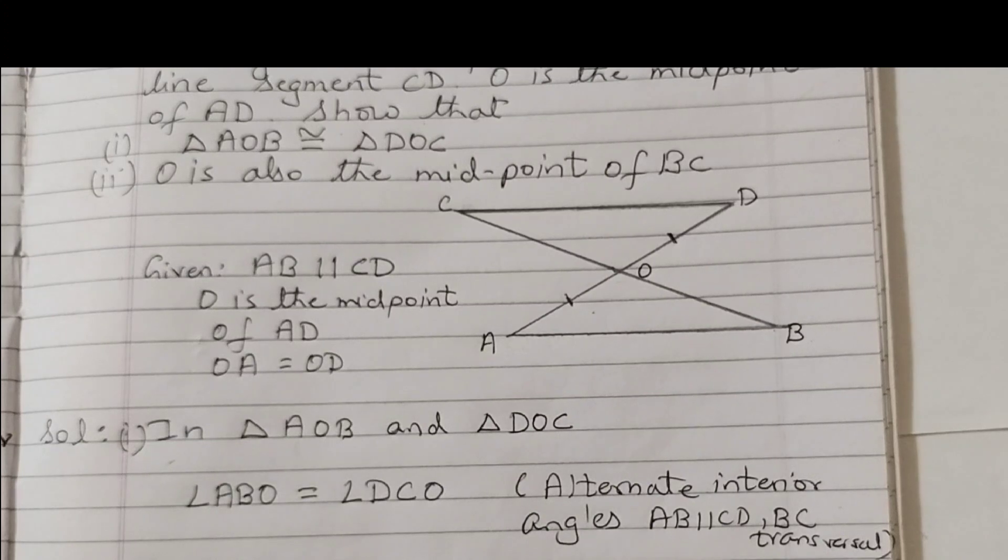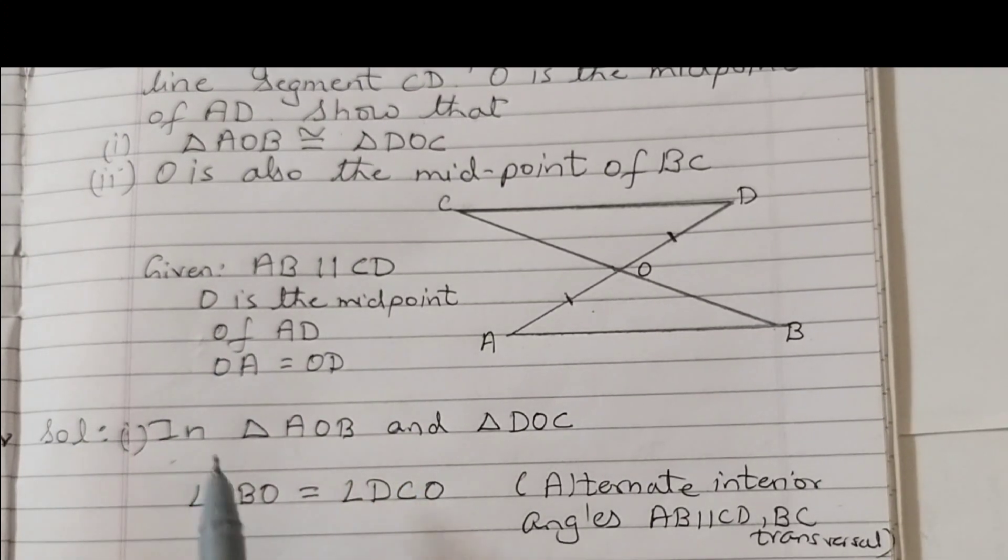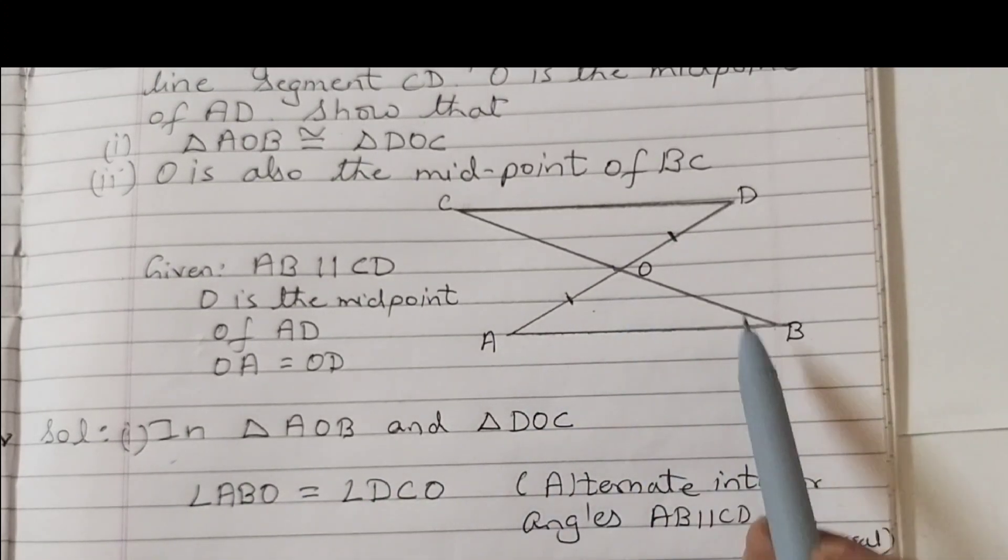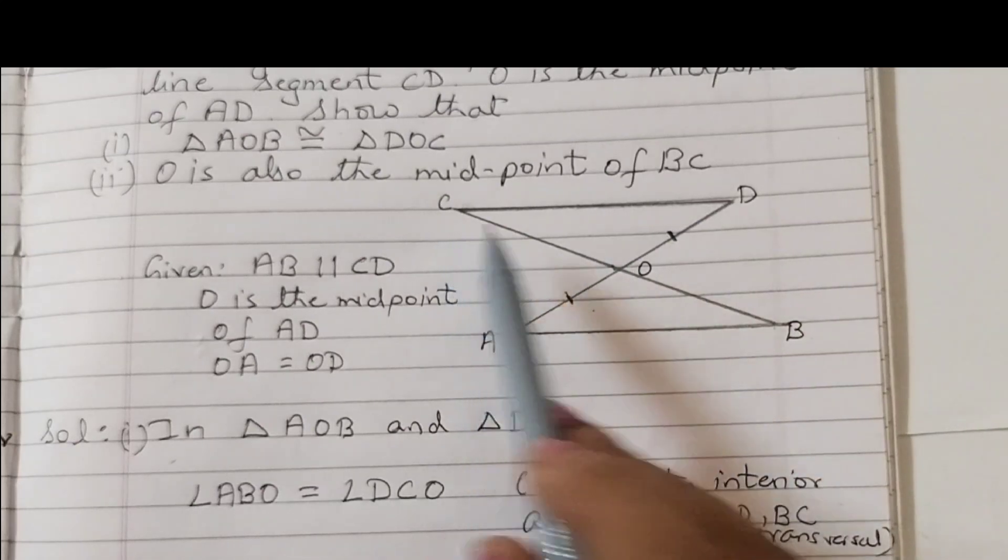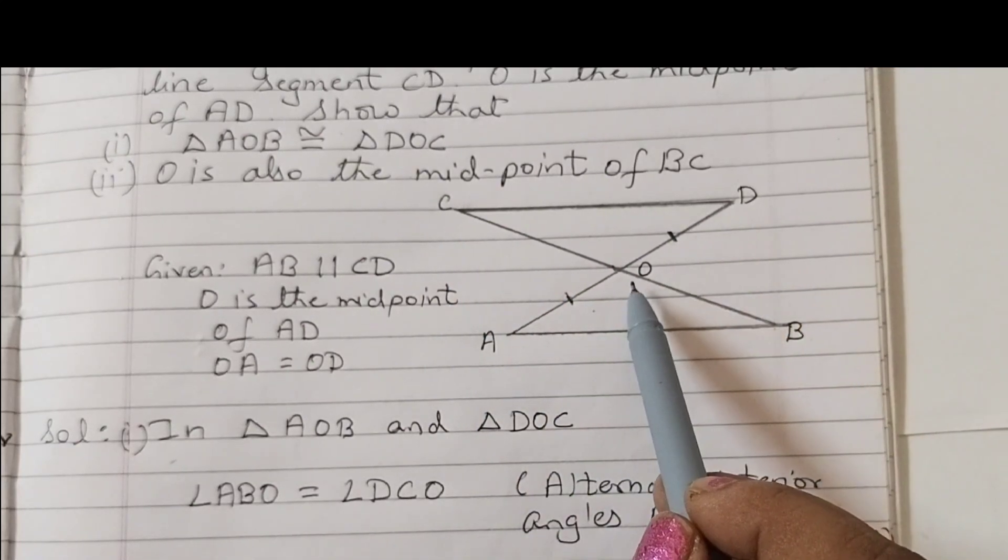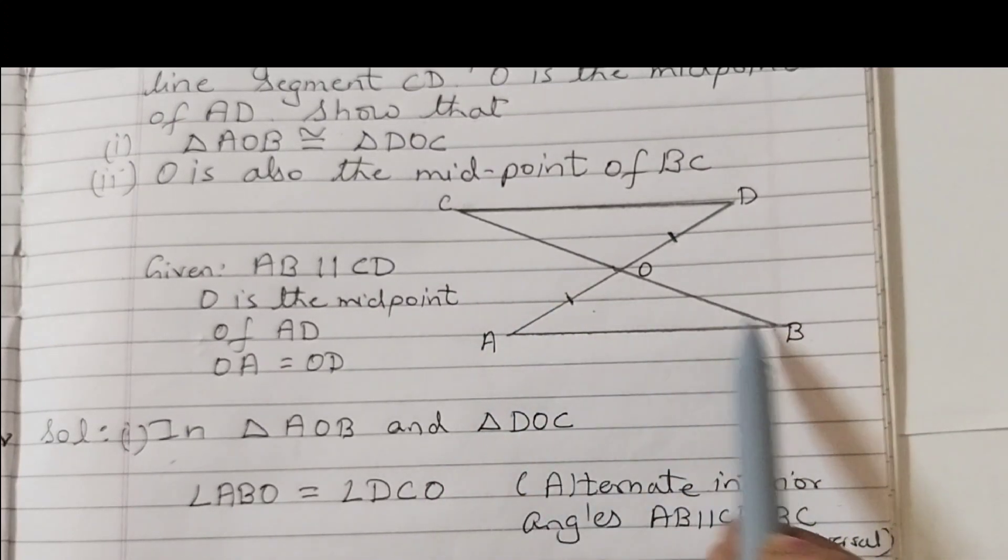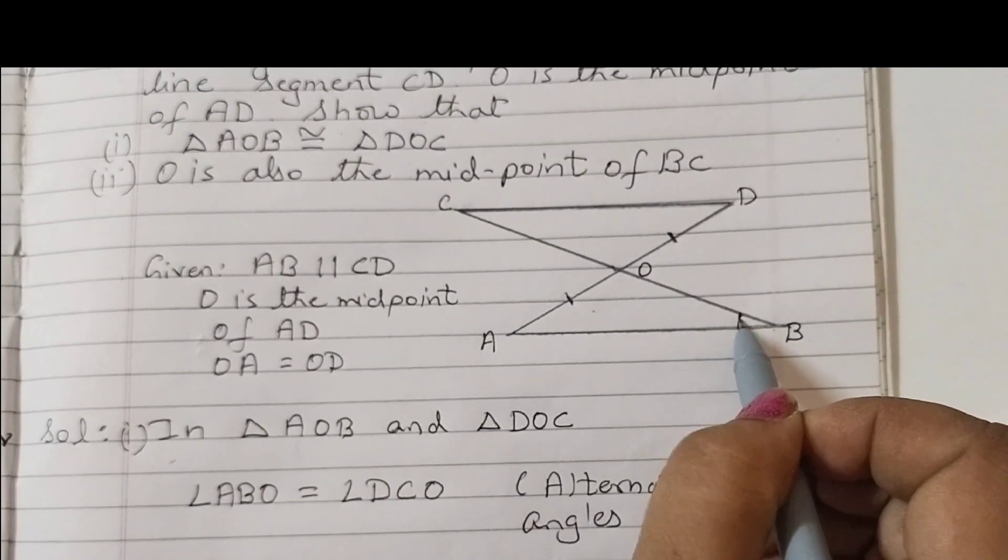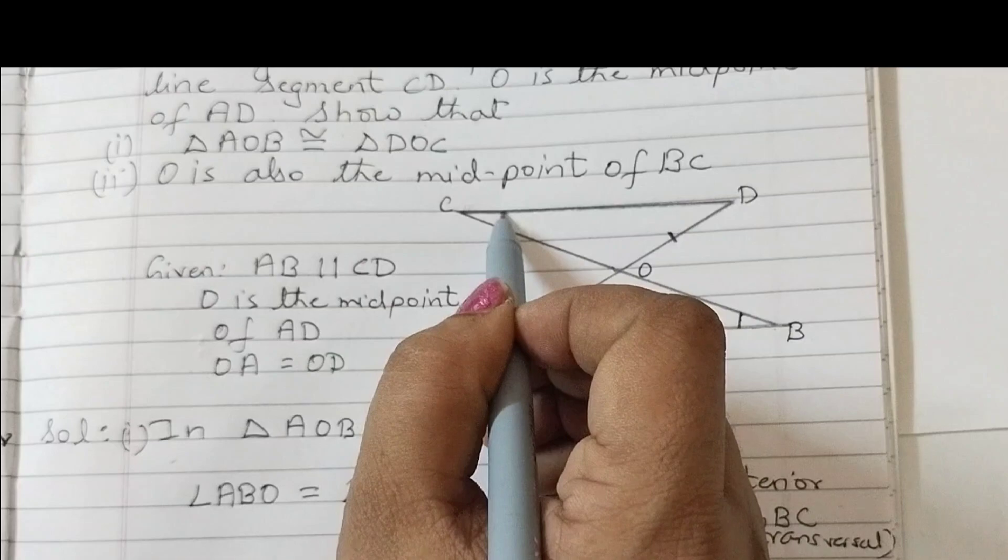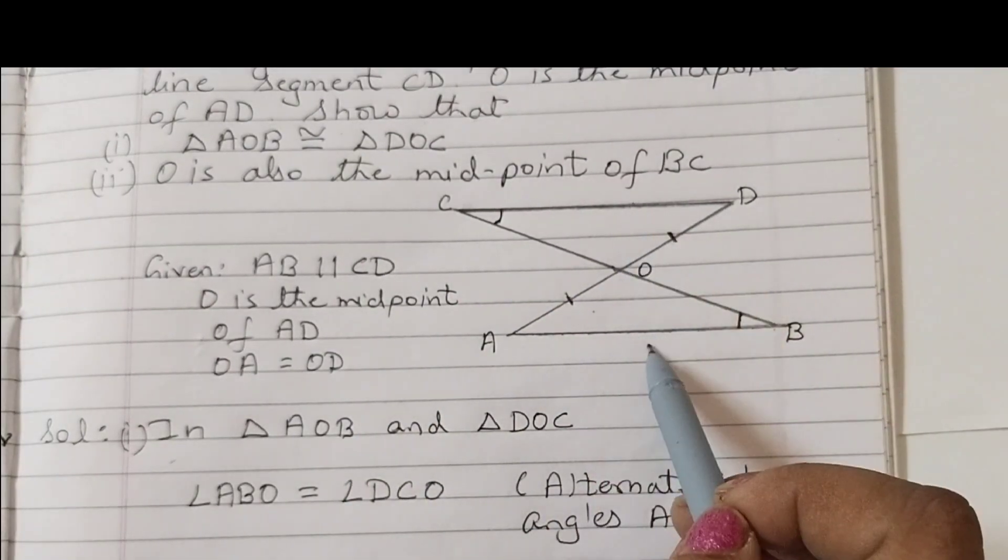Now coming to the solution, if you want you can take this given as a part of the solution. In triangle AOB and DOC, this angle ABO and angle DCO...